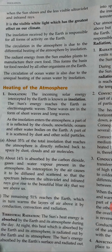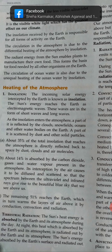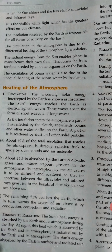14% of the insolation is absorbed by the atmosphere through carbon dioxide gas, water vapor, and dust particles. 51% of the remaining insolation reaches the earth's surface and is absorbed there as heat energy.